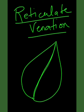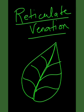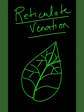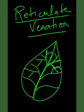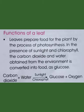In reticulate venation, the midrib gives out secondary veins, and the veinlets extend towards the leaf margin. These secondary veins and veinlets are irregularly branched, forming a network. Dicot plants show such venation, for example mango and peepal.